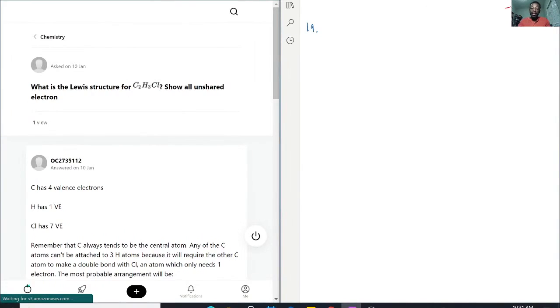So for this, let's just see how many electrons we are working with. Carbon, each carbon is 4, so that's 8 electrons. Hydrogen, that's 3 of them and each hydrogen is 1, so that's plus 3. Chlorine, that's 7 because it's on the 17th column. So 8 plus 3 plus 7. That is 18 electrons we are working with.